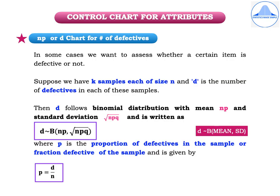Previously, I have explained the control chart for variables where we learned the X-bar or mean chart and the R chart which is the range chart. Now let me explain the NP or D chart for number of defectives.